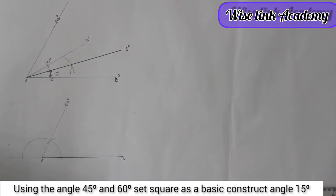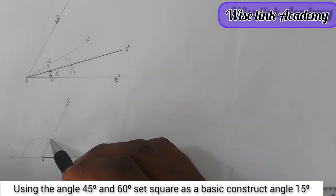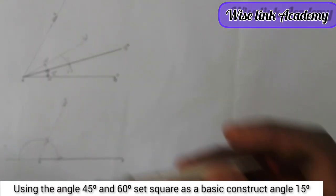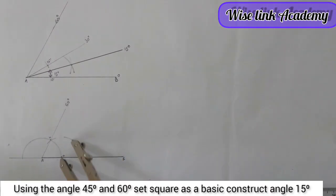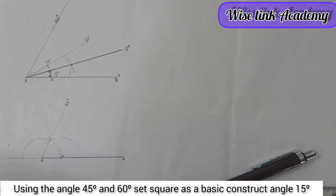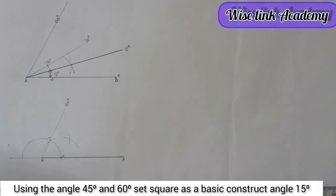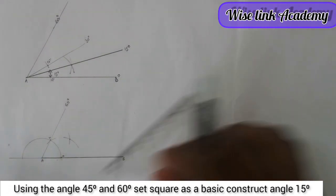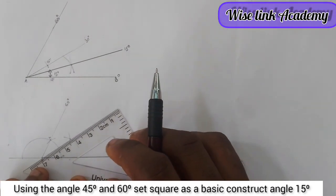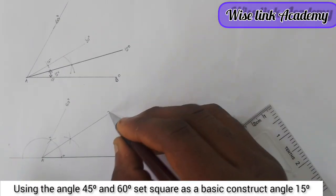My next statement is that half of 60 will give us 30. So I call this point A and this point B. I will take my compass with any radius of my choice, come to point A and strike an arc. Come to point B, and at point B, strike an arc. Where the arcs meet is at this point. At that point, I will draw a straight line — and the line will be drawn thin. Here it's going to be 30 degrees.